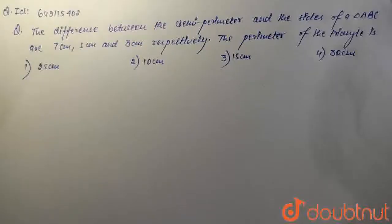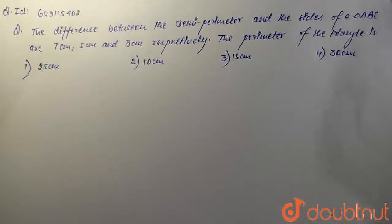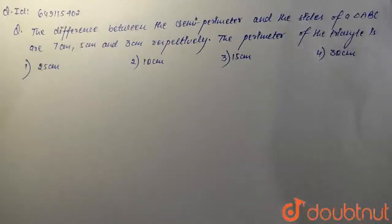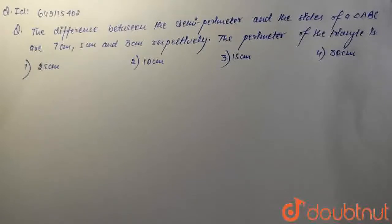The question is: the difference between the semi-perimeter and the sides of a triangle A, B, C are 7 cm, 5 cm, and 3 cm respectively. The perimeter of the triangle is — 4 options are given: 25 cm, 10 cm, 15 cm, or 30 cm.